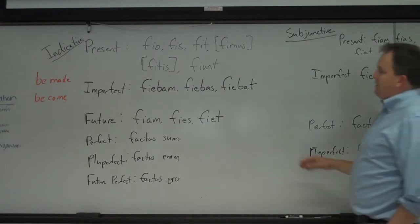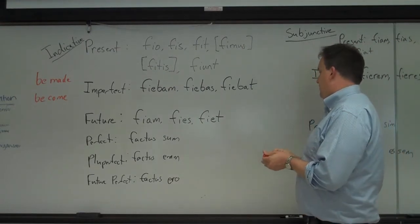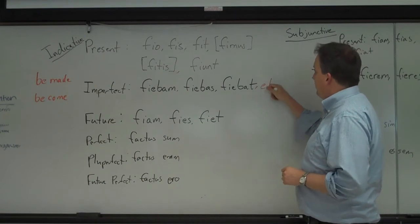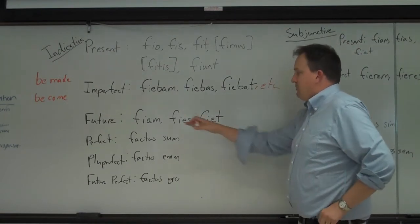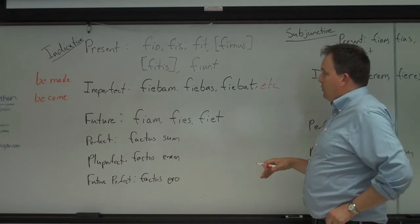And then imperfect: fiebam, fiebas, fiebat, et cetera. I don't give you all the forms here, but it just keeps going. And then future be fiam, fies, fiet. So that'd be like I will become, or I will be made.